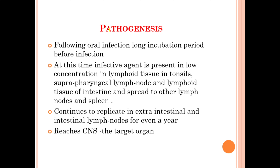Moving further into the pathogenesis of Scrapie: following oral infection, there is a long incubation period before actual infection. At this time, the infective agent is present in low concentration in the lymphoid tissues — in the tonsil, suprapharyngeal lymph node, and the lymphoid tissues of the intestine — and spreads to other lymph nodes and spleen. There is continuous replication in the extra-intestinal and intestinal lymph nodes for even a year.